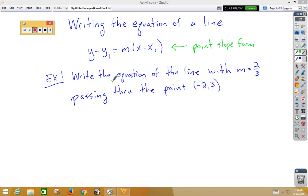In this video, we're going to learn how to write the equation of a line, and then write the equation of a line tangent to a curve at a point. We use point-slope form, which looks like this: y minus y1 equals m times x minus x1, which we learned in Algebra 1.